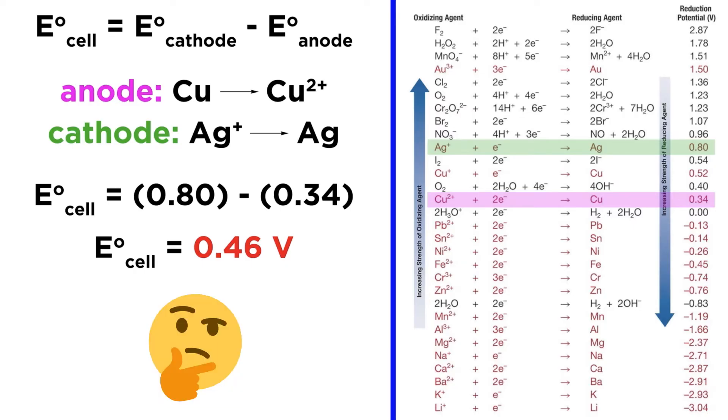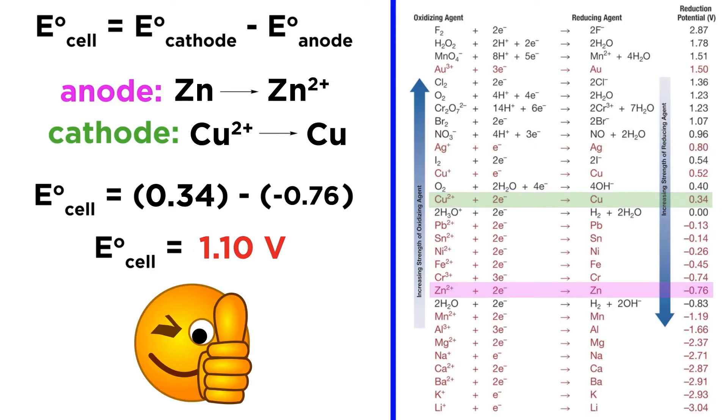Once calculated, we can compare our theoretical voltage to the experimental voltage. For our experiment, as we can see, our experimental voltage is pretty close to the theoretical voltage.